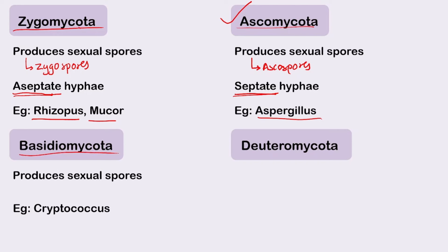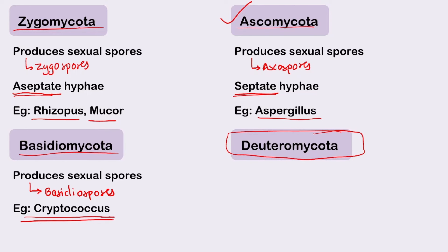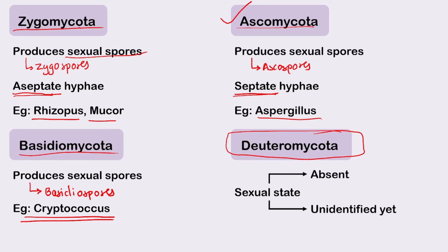Basidiomycota produces sexual spores called basidiospores, with example Cryptococcus. Deuteromycota is different — its sexual state is either absent or undefined, therefore this phylum is also referred to as Fungi Imperfecti. Most medically important fungi belong to Fungi Imperfecti.